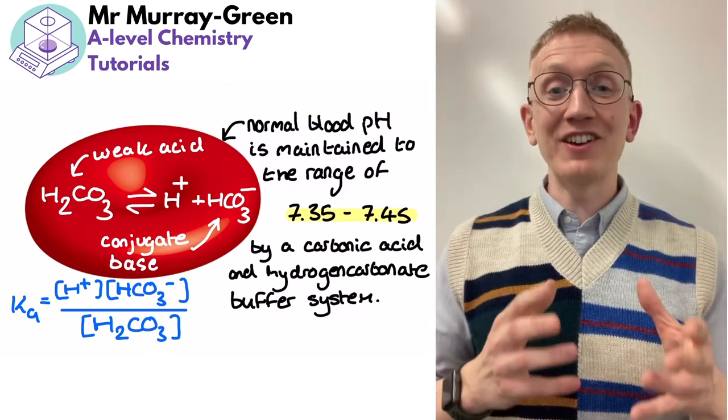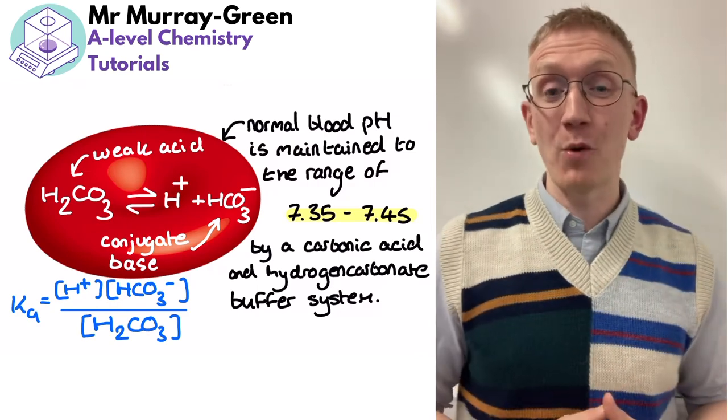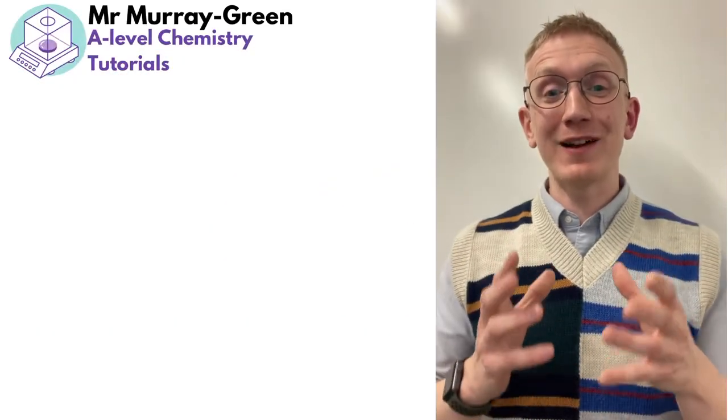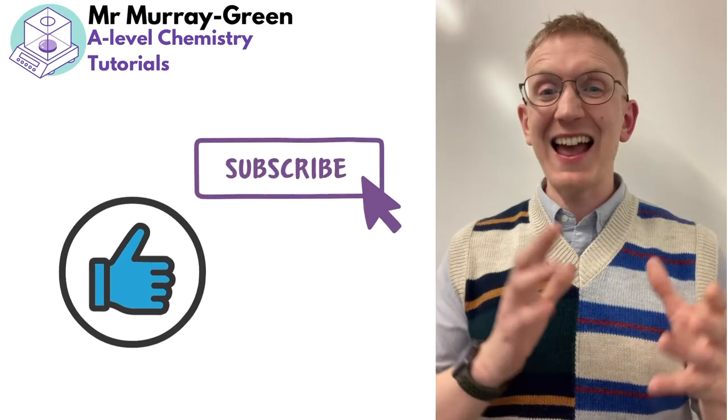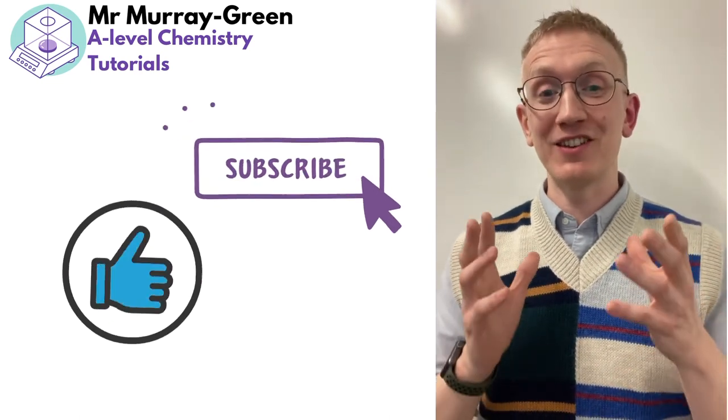The hydrogen carbonate ion, which was the conjugate base of our weak acid, is actually regulated by your kidneys, and excess HCO3- can be excreted in urine.